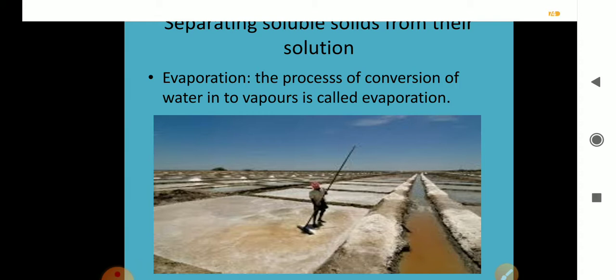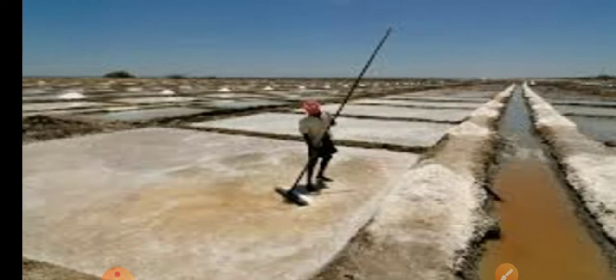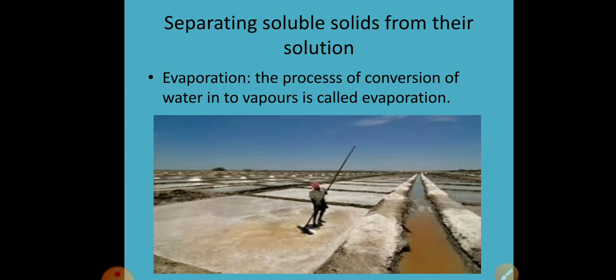This is the scene of sea coastal areas where salt is extracted from sea water. Beds are formed near the sea — you can see them clearly in this picture. Sea water is filled in these beds and then left to evaporate. The water evaporates leaving the salt behind. In the beginning, that salt was soluble in the water and not visible, but when the water evaporates, we can collect the salt left behind. This is an example of evaporation occurring naturally to separate salt from sea water.